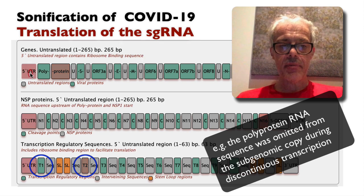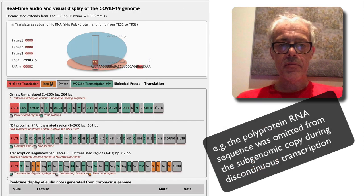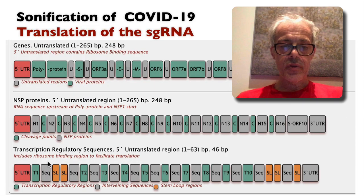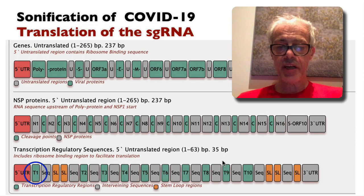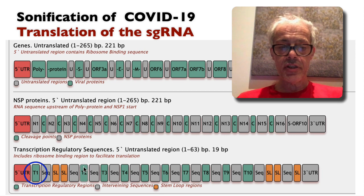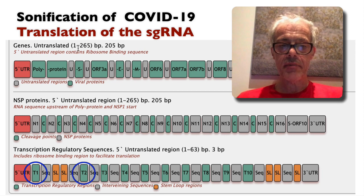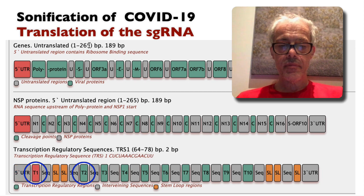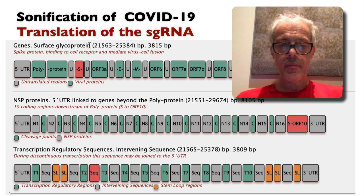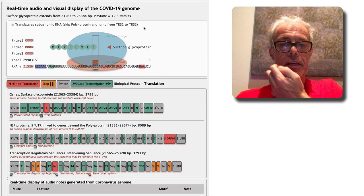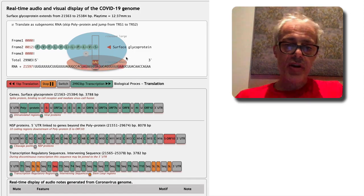So let me just show you that. If we just play this here — the TRS is coming up in 40 base pairs, where it will jump to this TRS, which is actually located right here. So here we are now reading the S protein.